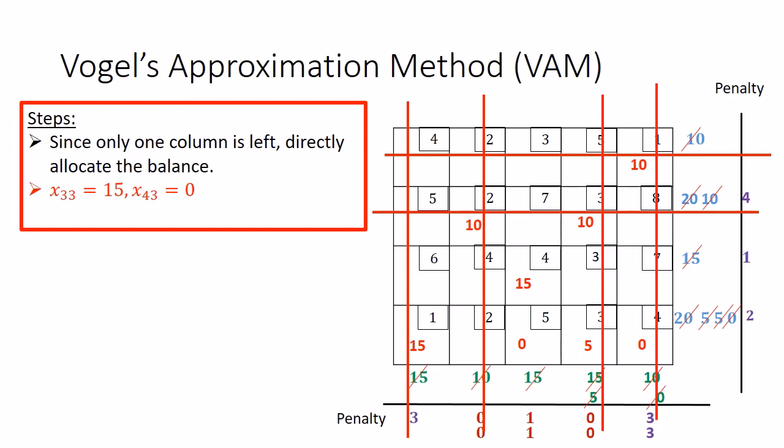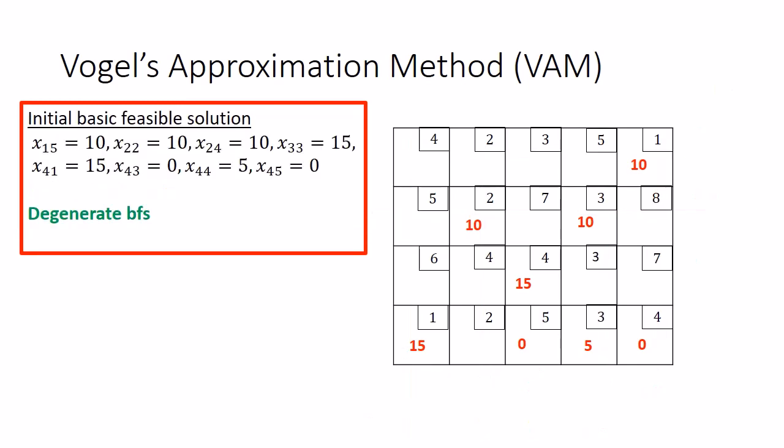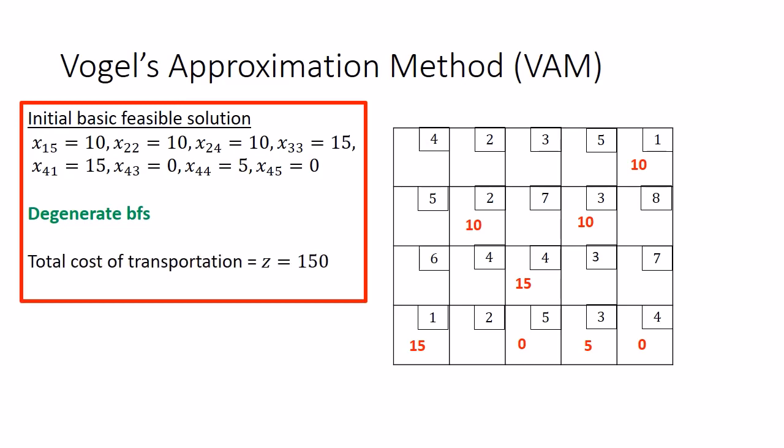This gives us the initial basic feasible solution via the VAM technique. This is a degenerate basic feasible solution, as two of the basic variables have value 0. Computing the cost of transportation — by multiplying each allocation with its respective cell cost — the total cost turns out to be 150 rupees.